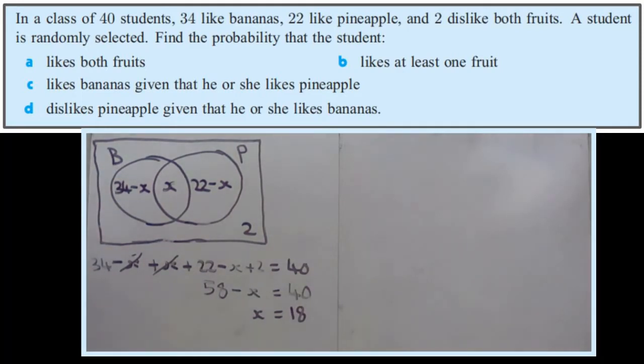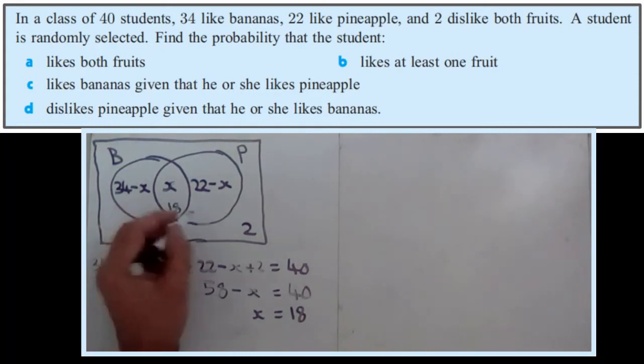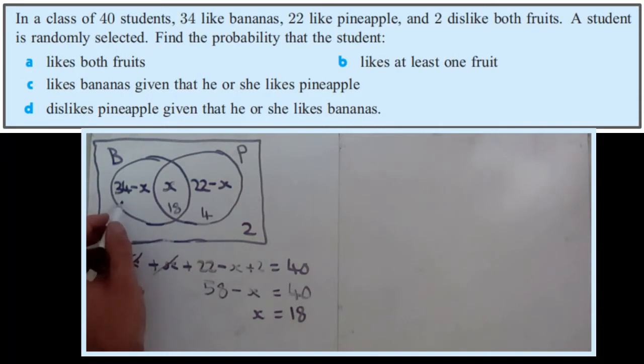So if X is 18, I can just start to fill in the diagram. I would just now put 18 in here. 22 minus 18 must be 4, and 34 minus 18 must be 16. So now we know how many are in each region. It should be really quick and easy to answer the probability questions.